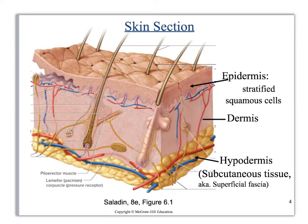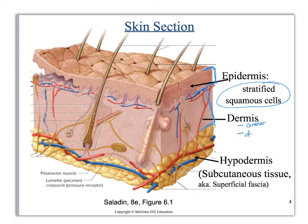The epidermis consists of stratified squamous epithelium. The dermis has two layers: one is areolar, the other is dense irregular — we'll talk more about that later. And technically not part of the skin but just deep to it is the hypodermis, or subcutaneous region.